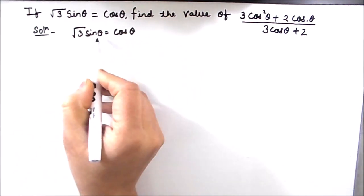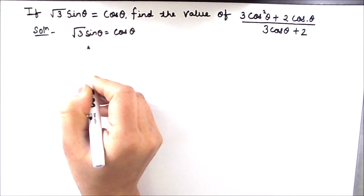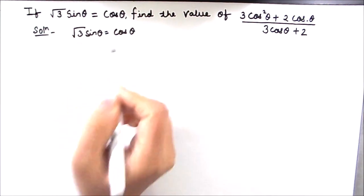So let us now find out the value of theta by transposing cos theta to the left hand side and root 3 to the right hand side.